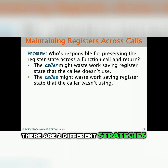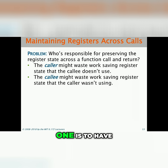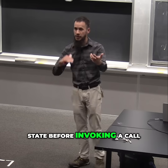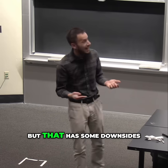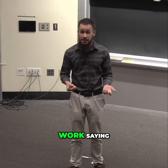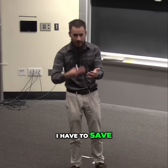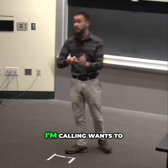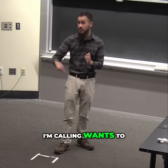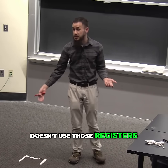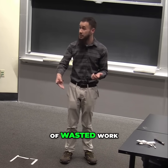There are two different strategies that could be adopted. One is to have the caller save off the register state before invoking a call. But that has some downsides — the caller might waste work saving all of that register state in case the function it's calling wants to use those registers, when in fact the calling function doesn't use those registers at all.